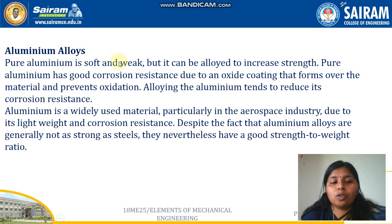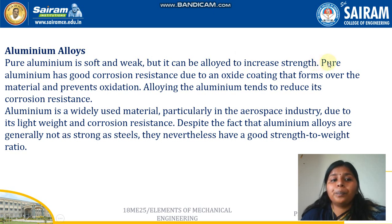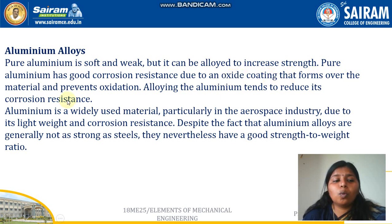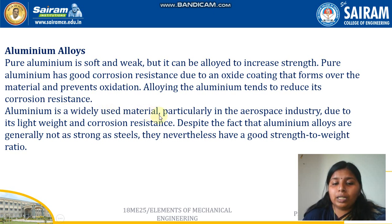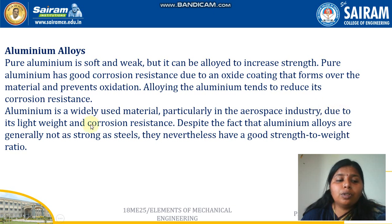Pure Aluminium is soft and weak but it can be alloyed to increase the strength. Pure Aluminium has good corrosion resistance due to an oxide coating that forms over the material and prevents oxidation. Alloying the Aluminium tends to reduce its corrosion resistance. Aluminium is a widely used material, particularly in the aerospace industries, due to its lightweight and corrosion resistance.